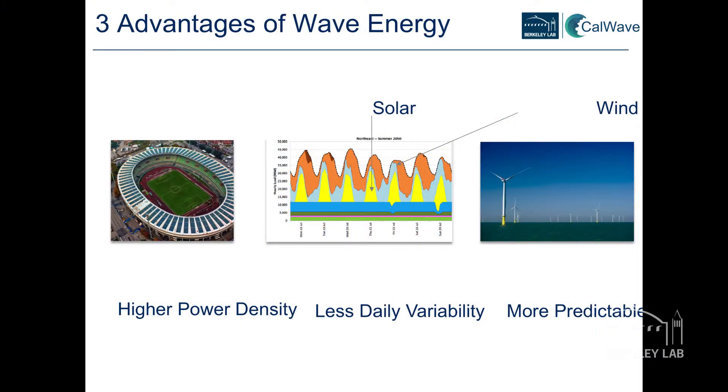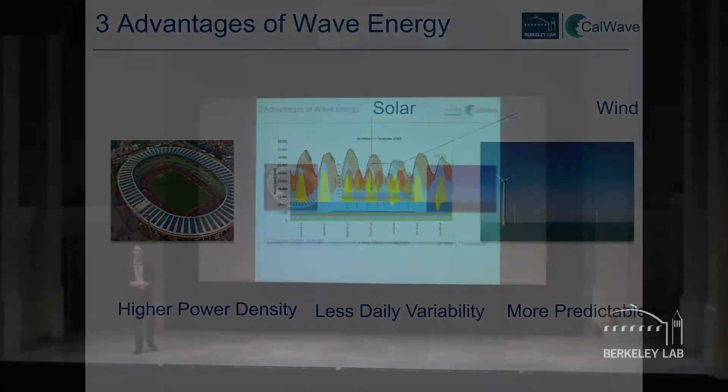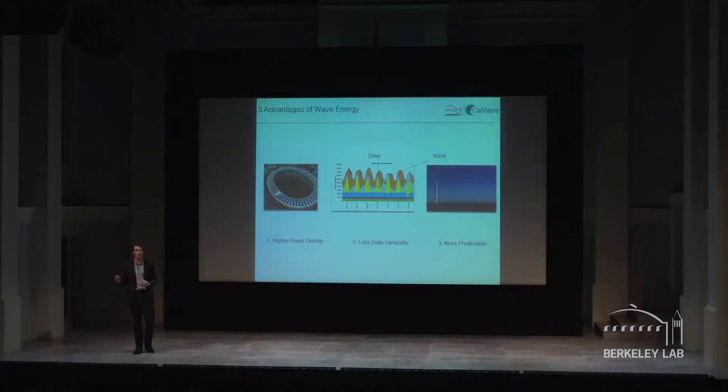The second big advantage is less variability. The sun only shines during the day, but wave power is available day and night. And the third big advantage is predictability. If you want to increase the renewable energy percentage in the grid, one of the major hurdles is predictability. Wave energy is actually predictable a week in advance, compared to wind energy, which can change in the order of seconds.